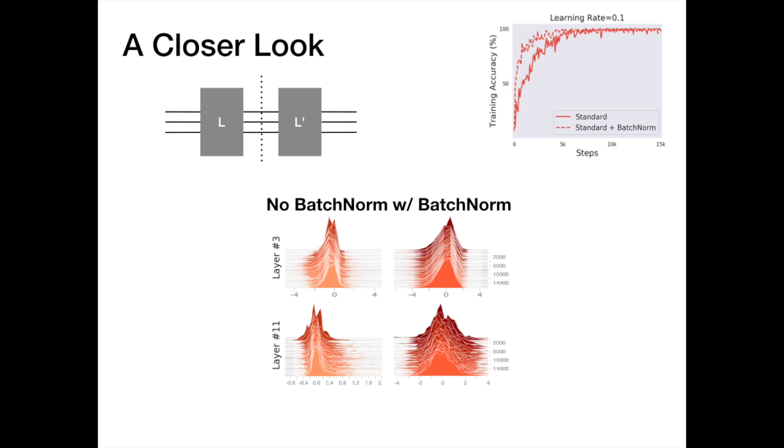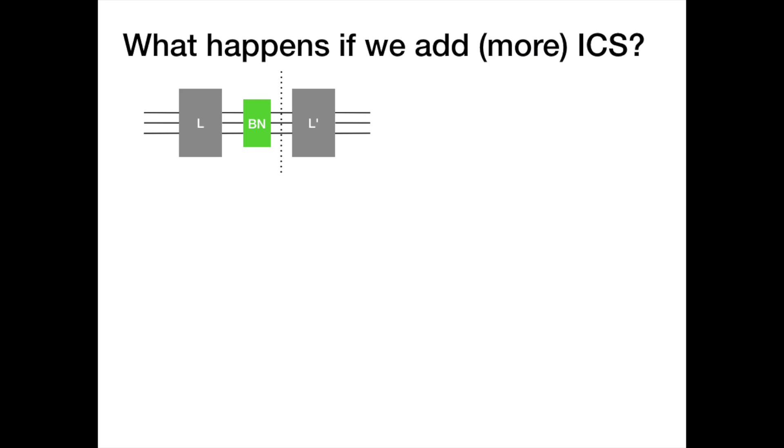So is batch norm really about reducing internal covariate shift then? In fact, what would happen if we manually added internal covariate shift to batch normalized networks? Specifically, what if we explicitly added noise to the mean and variance of the layers after normalization?